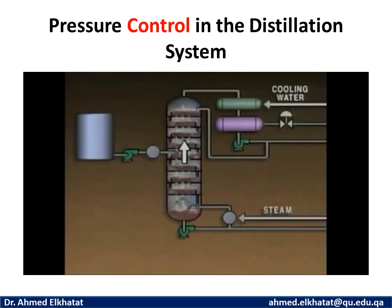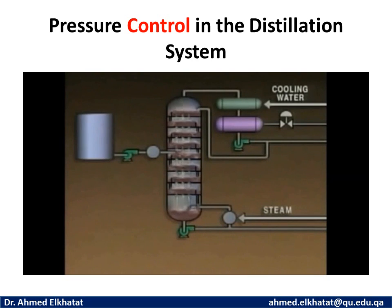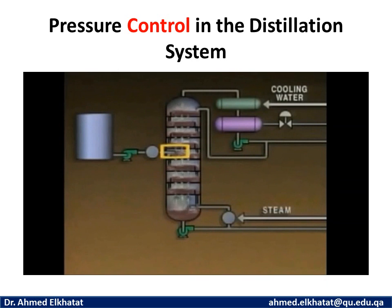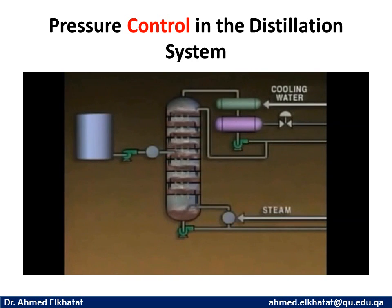Generally, if the rate at which vapors move up the tower decreases, the differential pressure will also decrease, and if the rate increases, the differential pressure will increase. Changes in differential pressure may indicate a problem. For example, an increase in differential pressure could indicate that the feed rate is too high. Too much feed entering the tower will overload it, causing the differential pressure to increase and the tower to be unable to make the desired separation, making it necessary to decrease the feed rate. Differential pressure changes may also be caused by a boil-up rate that is too high, meaning the reboiler is returning too much vapor or vapor-liquid mixture to the tower. This can be corrected by reducing the boil-up rate.